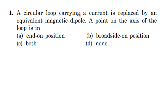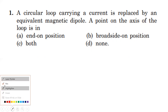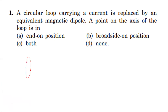A circular loop carrying a current is replaced by an equivalent magnetic dipole. A point on the axis of the loop — that is, a circular current-carrying loop — has one face as north and one as south. A point lies on the axis of the loop, which is the end-on position.